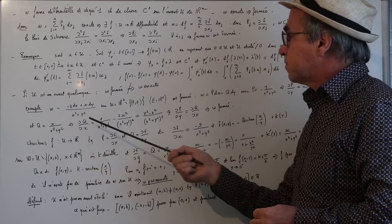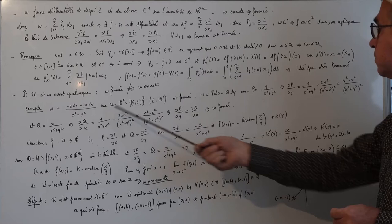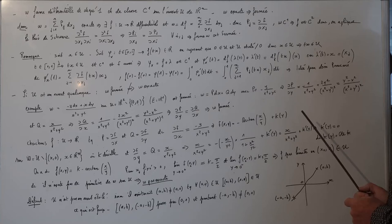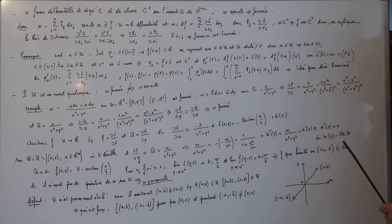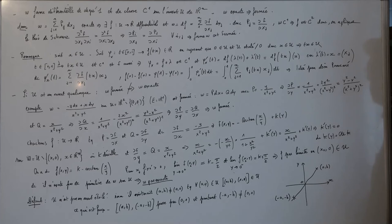On considère cette forme sur U = R² \ {(0,0)}. On va d'abord démontrer qu'elle est fermée. ω est de la forme P dx + Q dy avec P = -y/(x²+y²) et Q = x/(x²+y²). On calcule ∂P/∂y et ∂Q/∂x et on constate qu'ils sont égaux, donc ω est fermée.